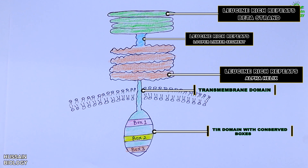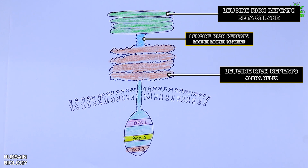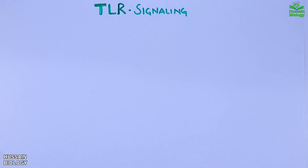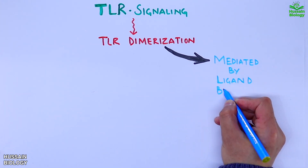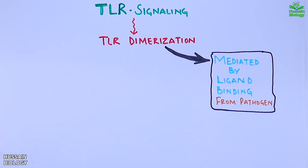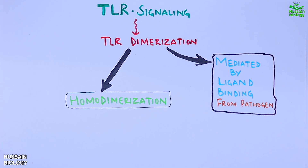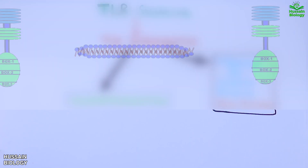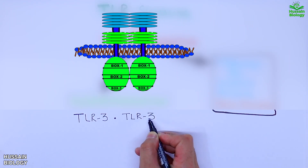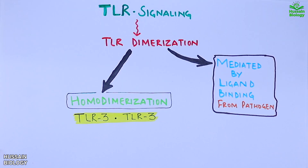Now we have TLR types. But in order to understand the types of TLR, first let's see how TLR signaling is initiated. It is initiated by TLR dimerization upon ligand binding from a pathogen, and this dimerization has two different forms. One is homodimerization — for example, a TLR3 monomer binds with another TLR3 monomer to form a TLR3 homodimer, as shown in the animation.